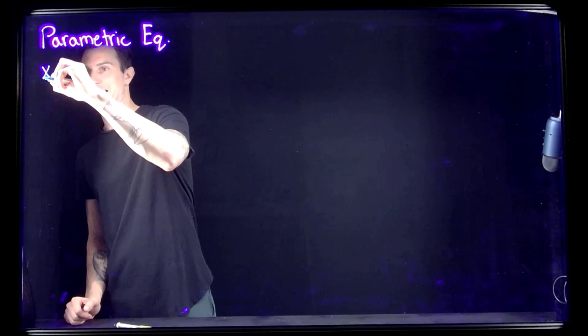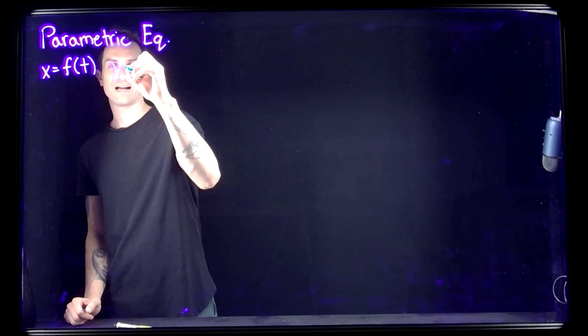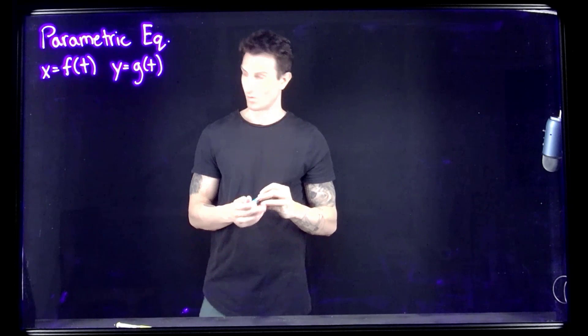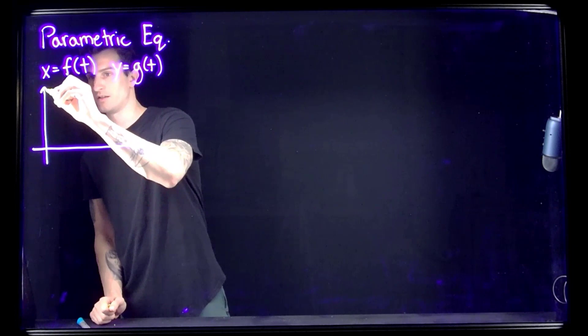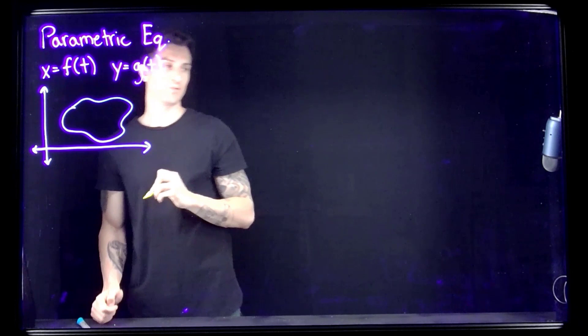The idea here is that we've been using functions, just typical y of x. But now we're going to say that x is a function of t, and y is another function of t. You might be asking, why do we need this? Why are we going to add in this extra variable t? Well, let's think about an idea. If I have some shape that looks like a blob and we want to perform calculus on it...